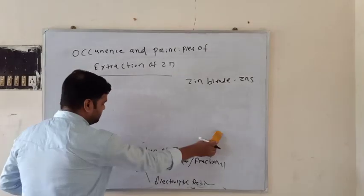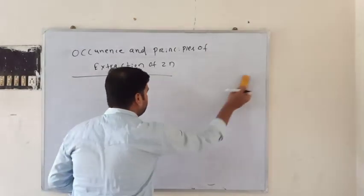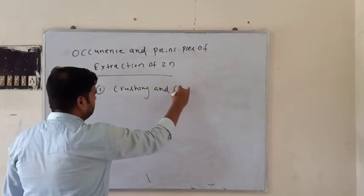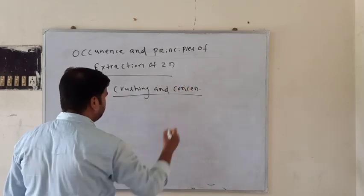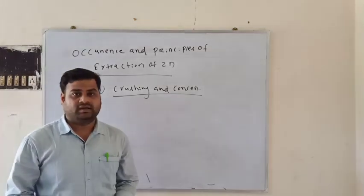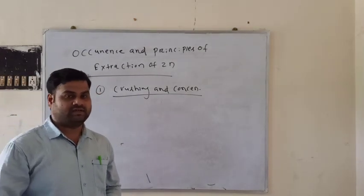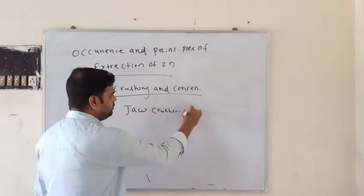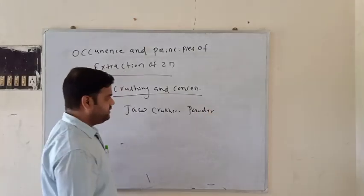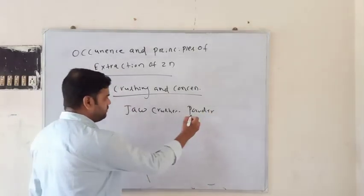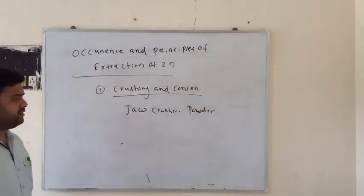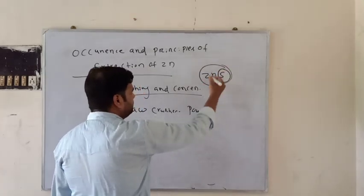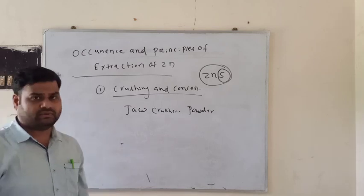In the crushing and concentration process, the large coarse ore is crushed with the help of a jaw crusher and converted into smaller particles. In the concentration process, zinc sulfide ores can be easily separated by the froth flotation process.